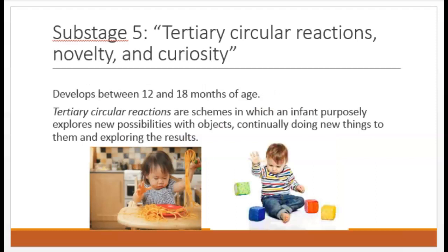The fifth sub-stage, tertiary circular reactions, novelty and curiosity, develops between a year and a year and a half. Tertiary circular reactions are schemes in which the infant purposely explores new possibilities with objects, continually doing new things to them and exploring the results — they become like little scientists. When playing with blocks, the child might stack them, bang them together, slide them across the floor, drop them over the edge of the couch, or throw them out the car window. The possibilities are endless as far as they're concerned. They're not trying to make you angry — this is just the stage their brain is in, and right now, wondering 'what would happen if I did this' is how they experiment with new behavior.